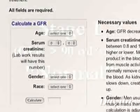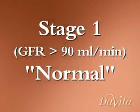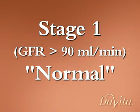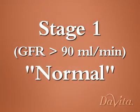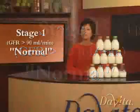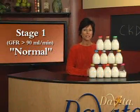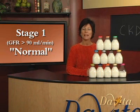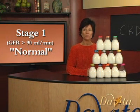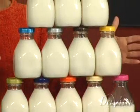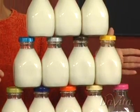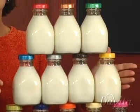At stage one, a person has a normal or high GFR at 90 milliliters per minute — that is the amount of blood filtered by the kidneys each minute. If you multiply that by the minutes in an hour, that's about 5,400 milliliters of blood, which translates to about 11 and a half pints of blood filtered per hour.